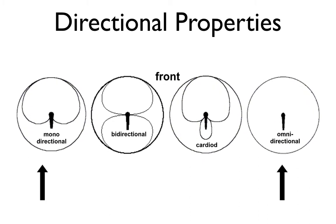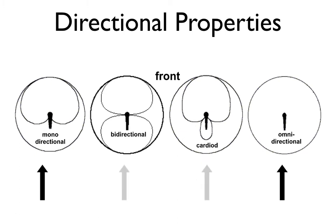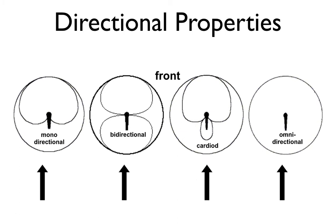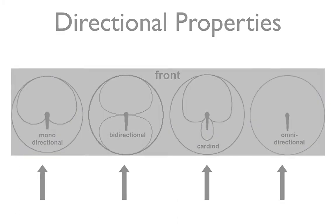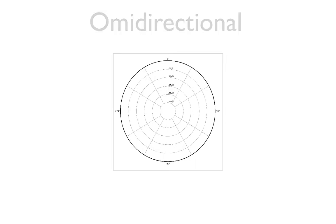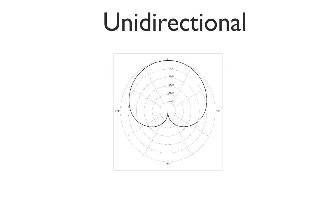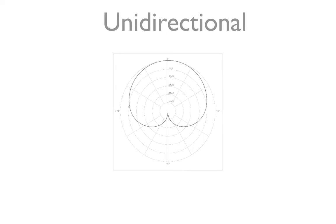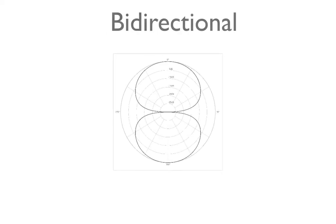Here are the three main categories: omnidirectional picks up sounds evenly from all directions; unidirectional picks up sounds mostly in one direction — this includes cardioid and hypercardioid microphones; and bi-directional picks up sound from two opposite directions.